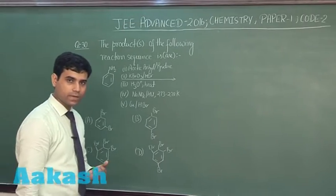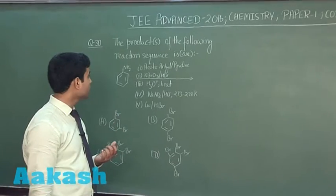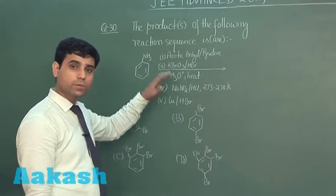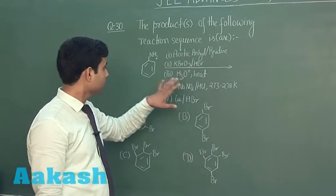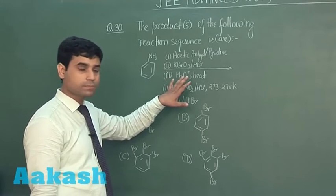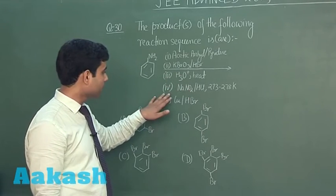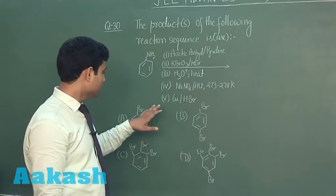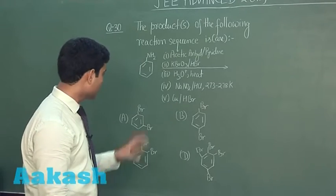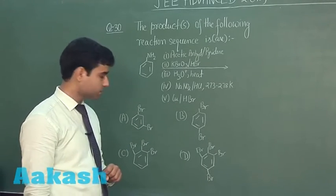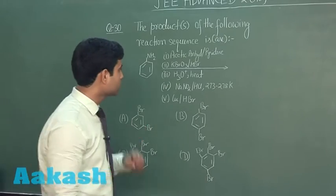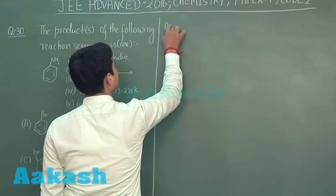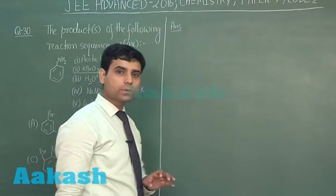This is the next question we have. The product or products of the following reaction sequence. We have aniline and the sequence is given: acetic anhydride and pyridine, then KBrO3 and HBr, then H3O+ and heat, then NaNO2 with HCl at 273 to 278 Kelvin, and in the end we have copper and HBr. What will be the product formed in this sequence? The options given here. Now let us solve this question.